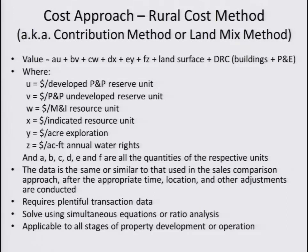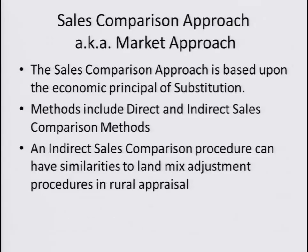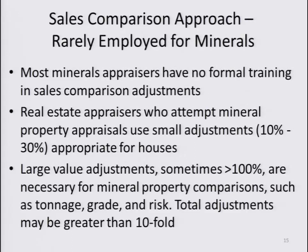The sales comparisons approach is the market approach. It's based on the economic principle of substitution and includes direct and indirect sales comparison methods. An indirect sales comparison procedure can have similarities to land mix adjustment procedures and rural appraisal. Most mineral appraisers have no formal training in sales comparison or adjustments. Real estate appraisers who attempt mineral property appraisals use small adjustments from 10% to 30%, but larger adjustments — sometimes greater than 100% — are necessary for mineral property comparisons such as tonnage and grading risk. Total adjustments may be greater than 10-fold.